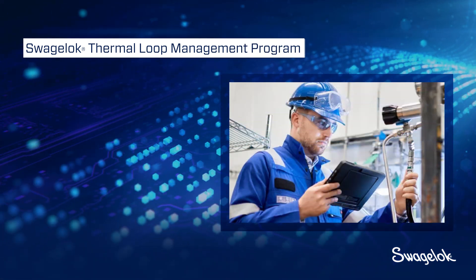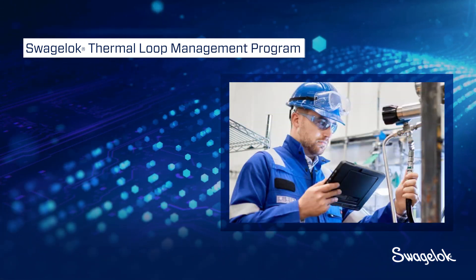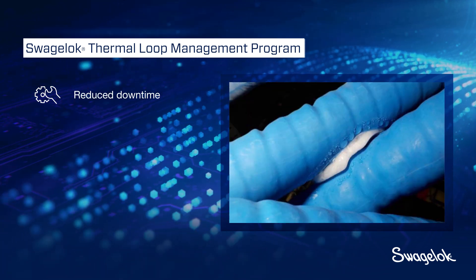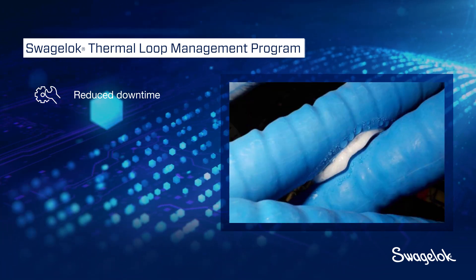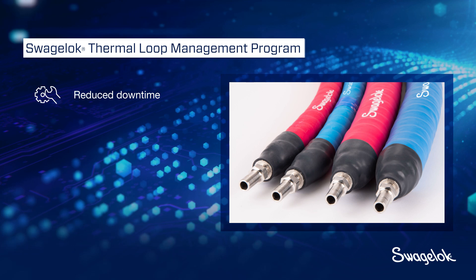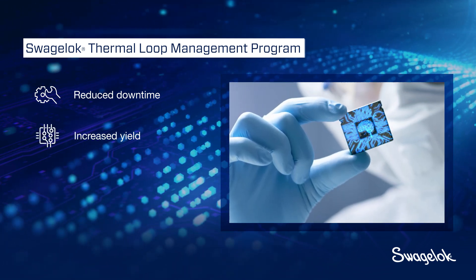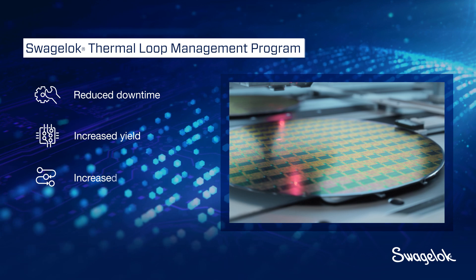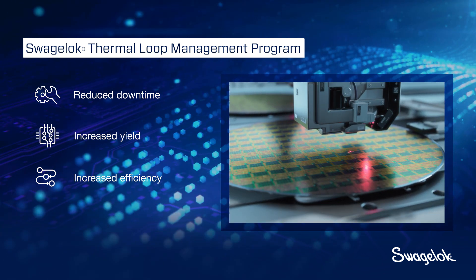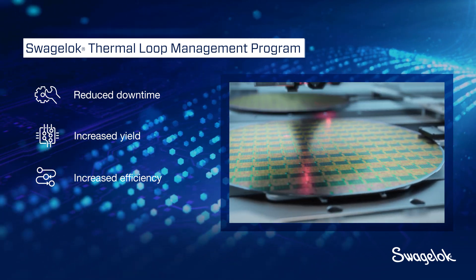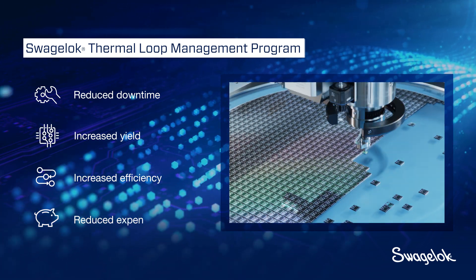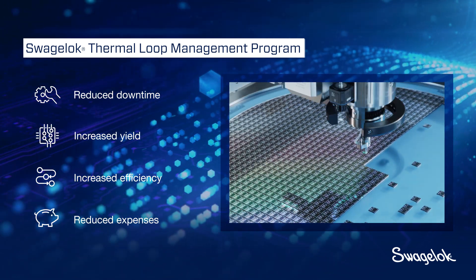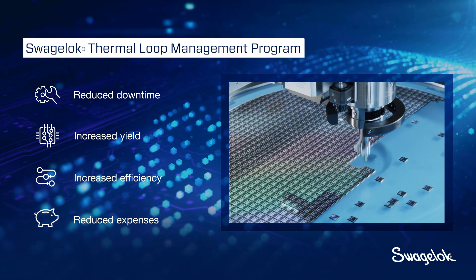In partnership with a local Swagelok field engineer, the Thermal Loop Program can enable reduced downtime by preventing condensation that would typically cause process interruption, increased yields achieved through minimal thermal variation, increased efficiency and reduced energy costs due to improved chiller performance, and reduced capital expenses and operating expenditures thanks to streamlined processes with a single vendor.